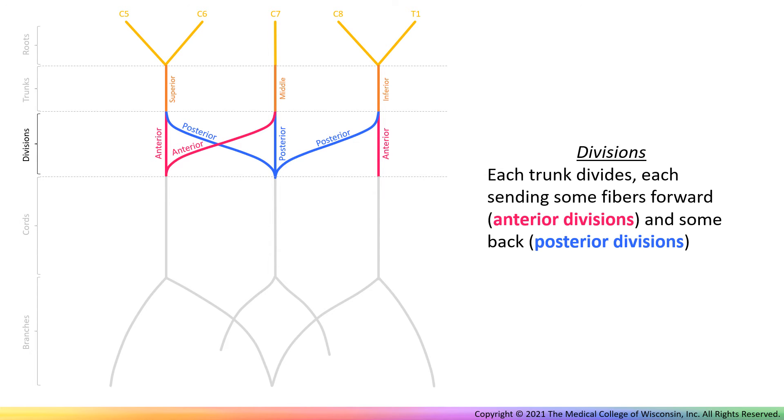Then each trunk splits, sending some fibers anteriorly and some posteriorly, with all the posterior divisions eventually merging together in the middle.